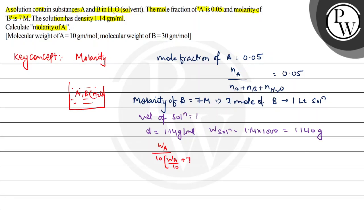Weight of A upon molecular weight of A plus 7 moles for number of moles of H2O, weight of H2O upon 18, equals 0.05. Now the second equation: molecular weight of B is 30 gram. So 7 moles of B, weight upon molecular weight of B, 30, weight is 210 gram.